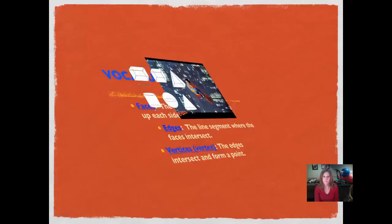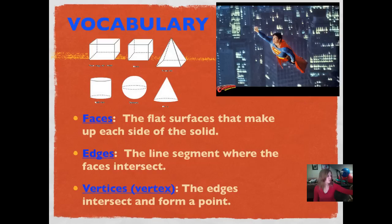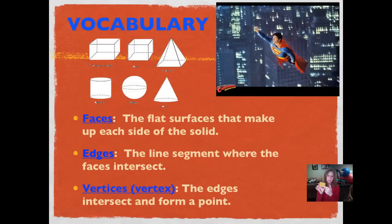Here's our vocabulary. Faces are the flat surfaces that make up each side of the model. If you look at me right now in the picture, this is a face right here — this flat surface — and each of these are faces. You can count them, and then you know how many faces this solid figure has. The edges are the line segment where the faces intersect. Here's a face and here's a face, and where they meet is the edge. There are lots of edges on this shape.